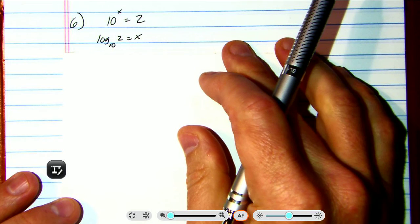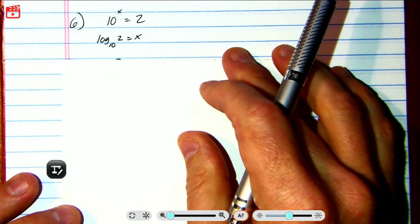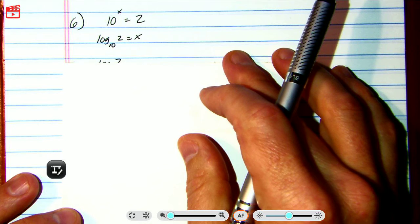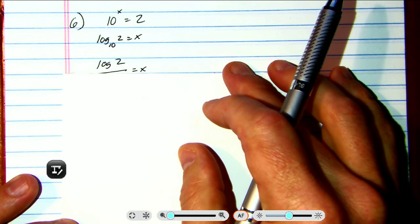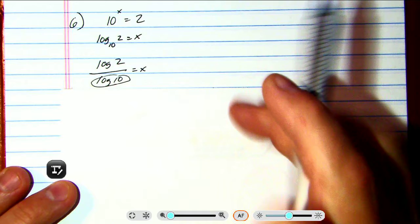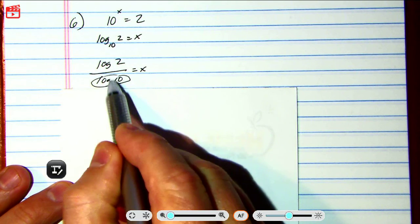So then we use the change of base formula to solve this. And log base 10 of 2, you can write it like this, log of 2 over log of 10, because we're choosing to use base 10 right here and here.